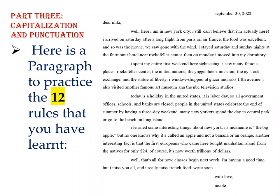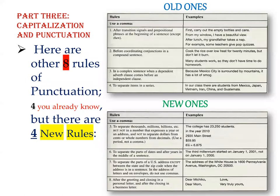If you want to send your answers to the Telegram group, send them and we will send the correction file. Now we will take four extra comma rules. These first four rules we have already covered: use a comma after transition signals and prepositional phrases, before coordinating conjunctions in compound sentences, when a dependent adverb clause comes before an independent clause, and to separate items in a series.